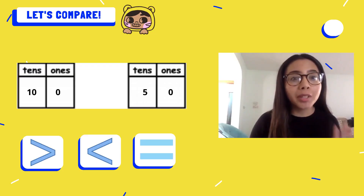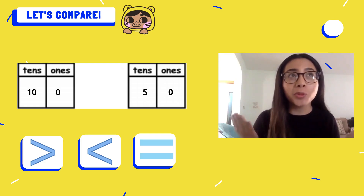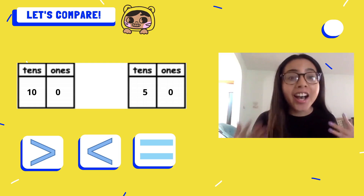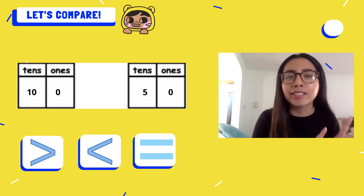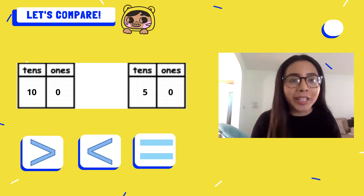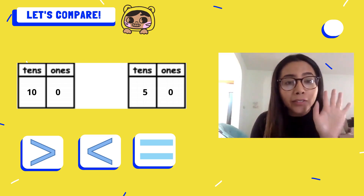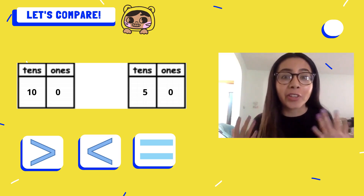Kipsters, I have two numbers here shown in place value charts. Which number is greater? I have a hundred and fifty. A hundred is greater because ten tens — like I see in the tens place — ten tens is bigger or greater than just five groups of ten. A hundred is greater than fifty.